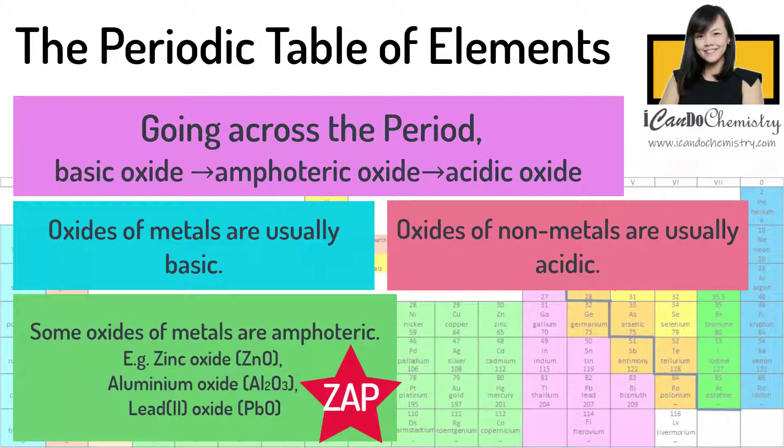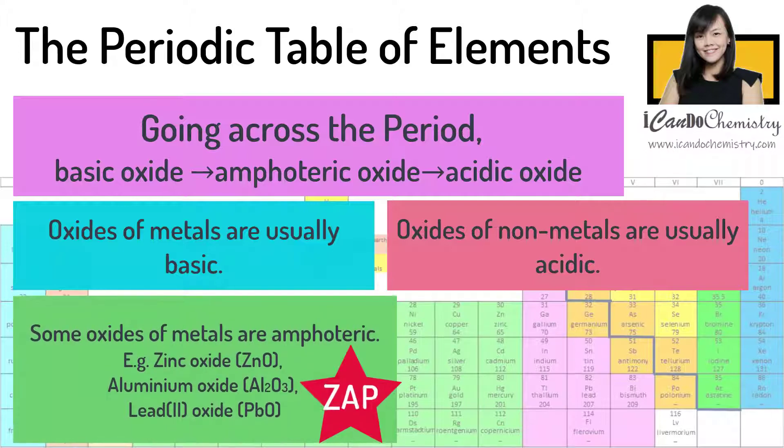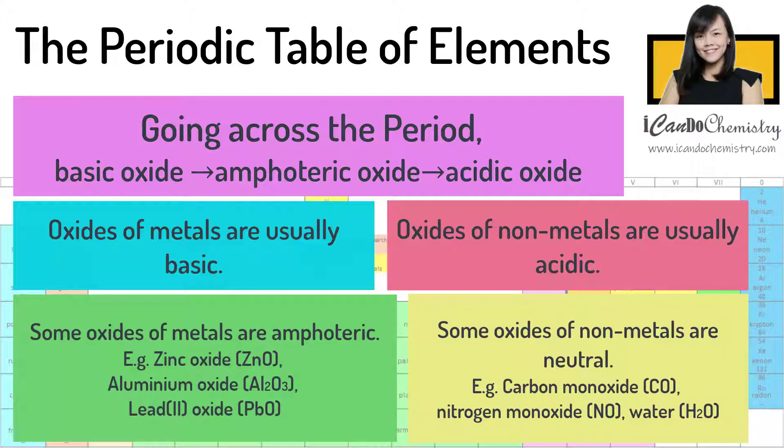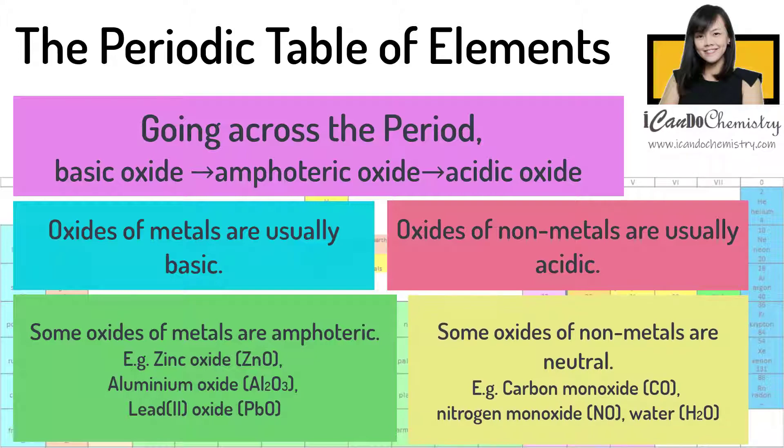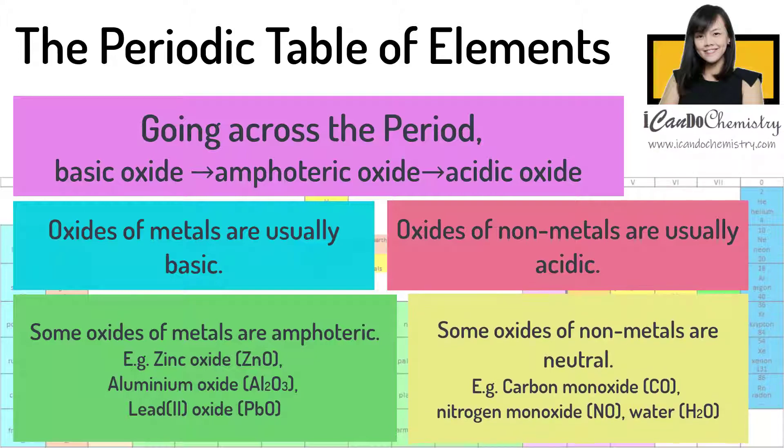Some oxides of metals are actually both basic and acidic. They are called amphoteric oxides. Common examples are zinc oxide, aluminum oxide and lead 2 oxides. Now some oxides of non-metals are neutral oxides. For example, carbon monoxide, nitrogen monoxide and water.